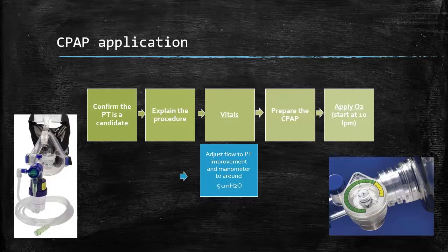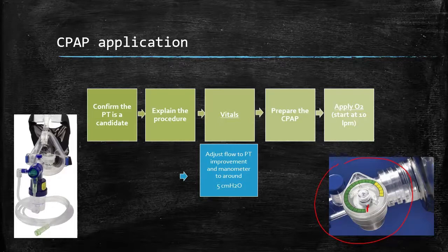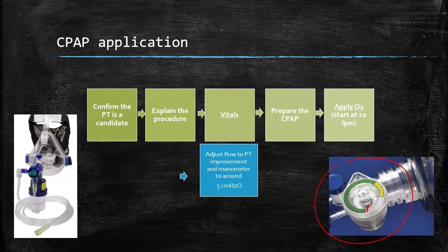What we're looking for at 10 liters per minute is a number on the manometer — that dial device on the right-hand side — of around five centimeters of water. The only time you're going to be able to read that dial is when they exhale; when they inhale, it's probably going to go down to zero. When they exhale is when you take your reading, and you want a number around five. Every patient's different, so starting at 10 is a good starting point. Once you get to that area, ask the patient how it feels — do they feel like they're having a better time breathing? If they say it's too much pressure, bring the oxygen level down; if not enough, bring it up. It's all about patient comfort and patient improvement.